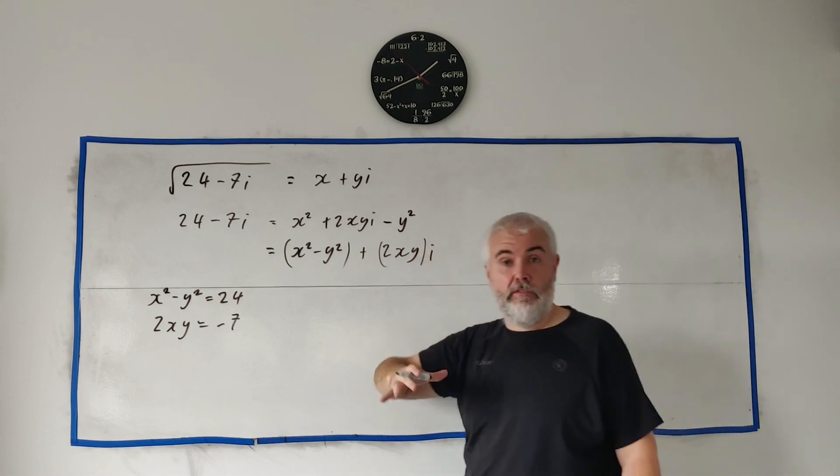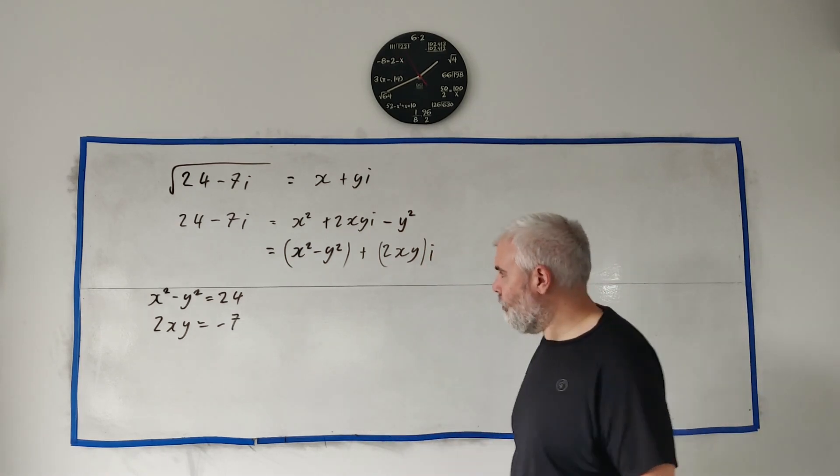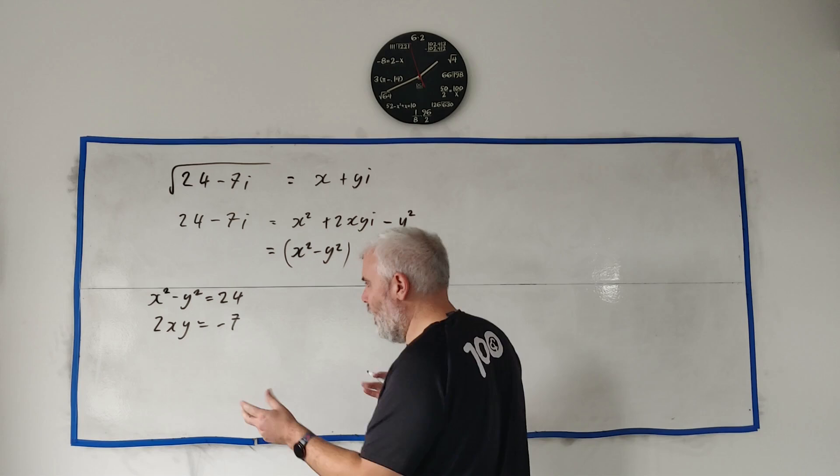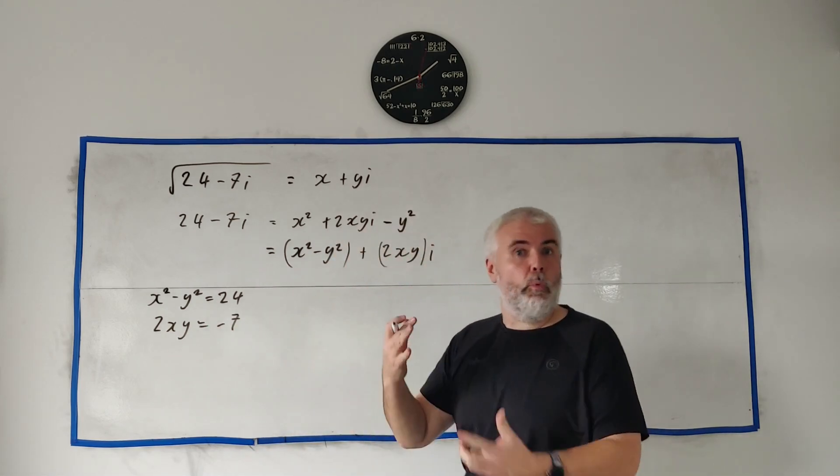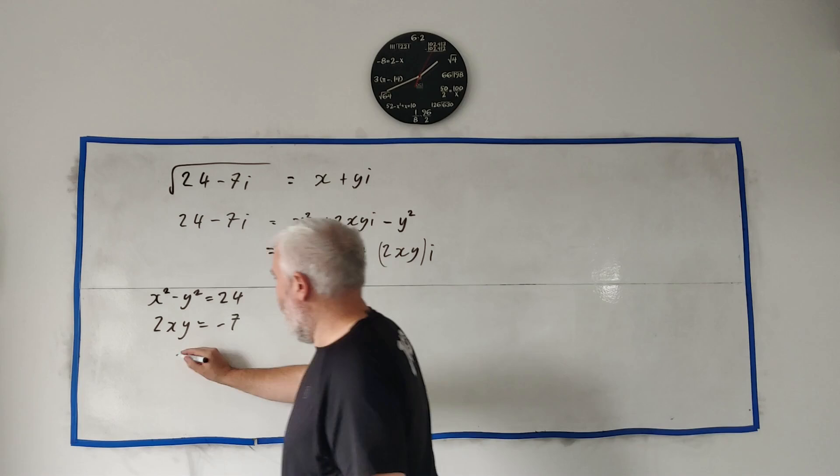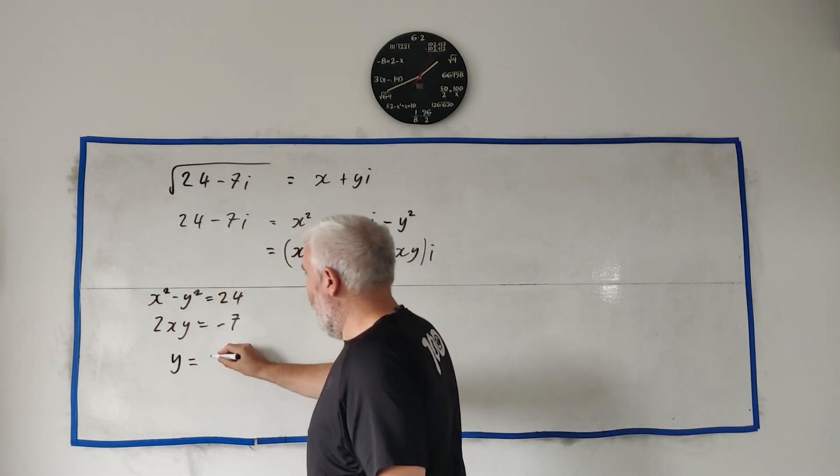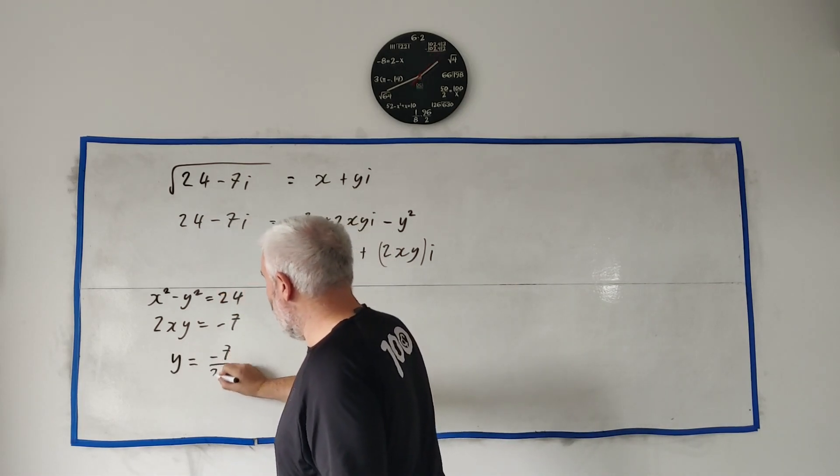So we've moved on from this question and now we're trying to solve a simultaneous equation. You can do this multiple ways, but I'd recommend you just set an x equals or y equals—whichever you want. I'll get y equals in this case, and minus 7 divided by 2x.